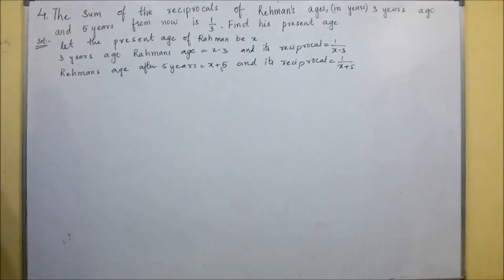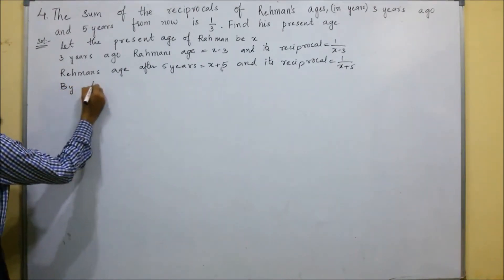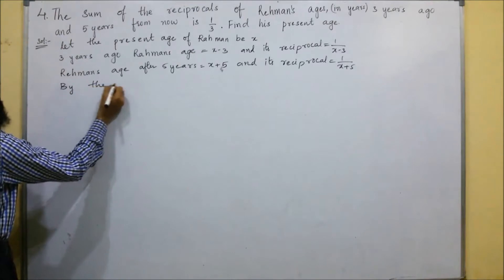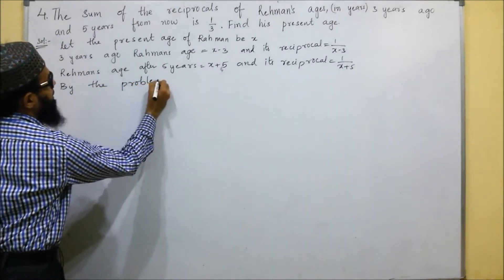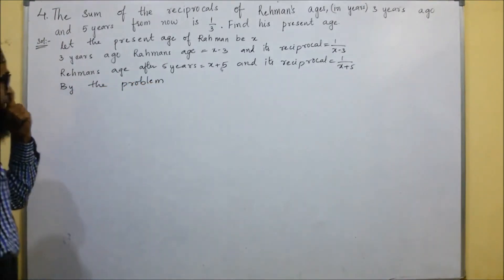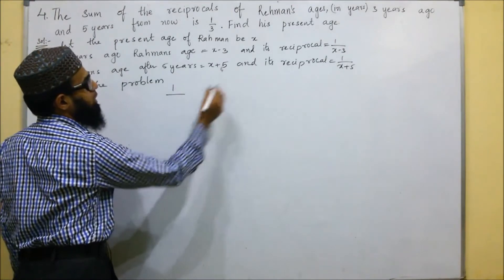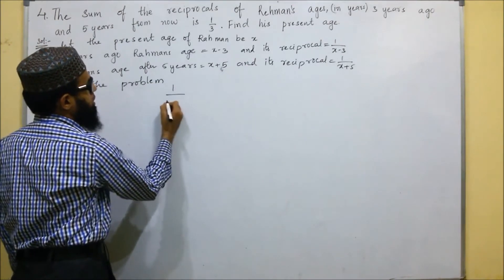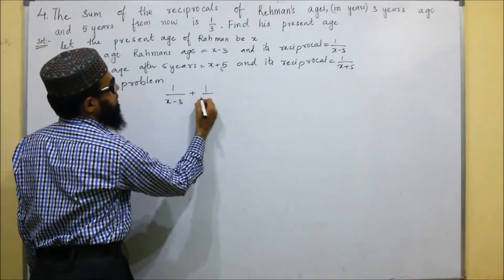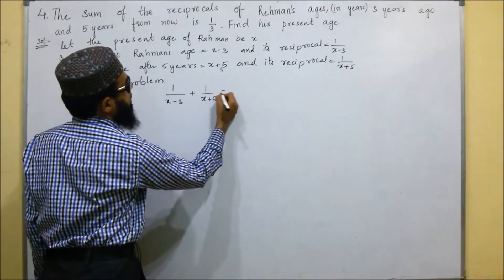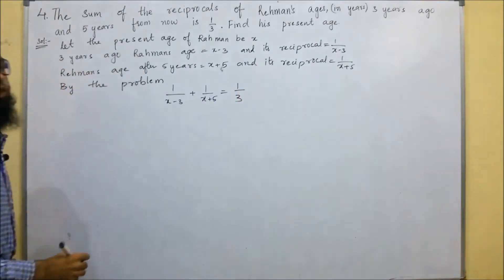If we add these reciprocals, by the problem they said that the sum of the reciprocal ages is one by three. So: one by (X minus three) plus one by (X plus five) equals one by three.